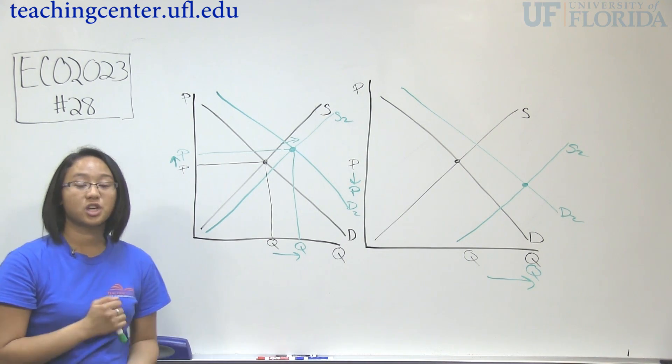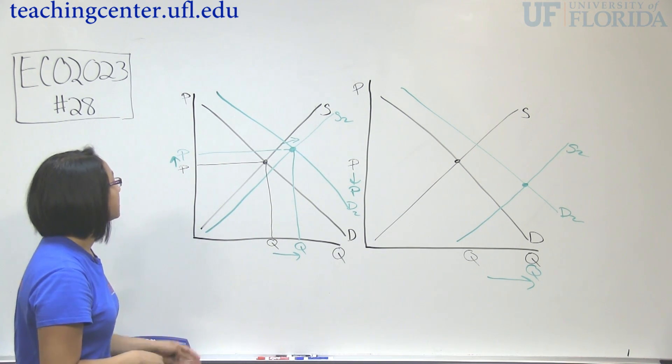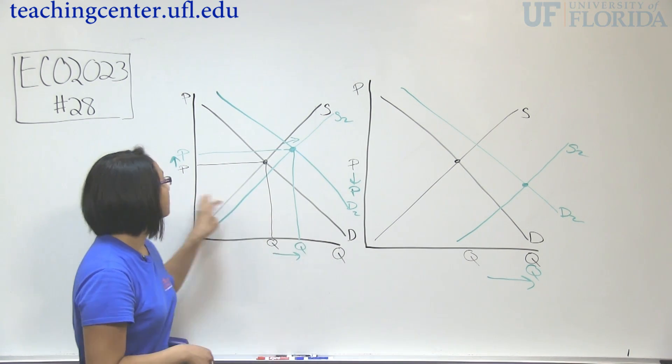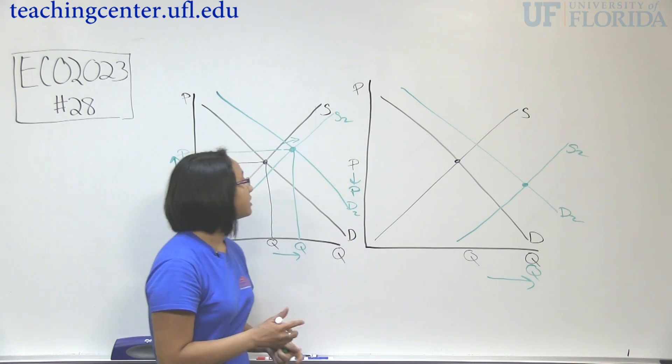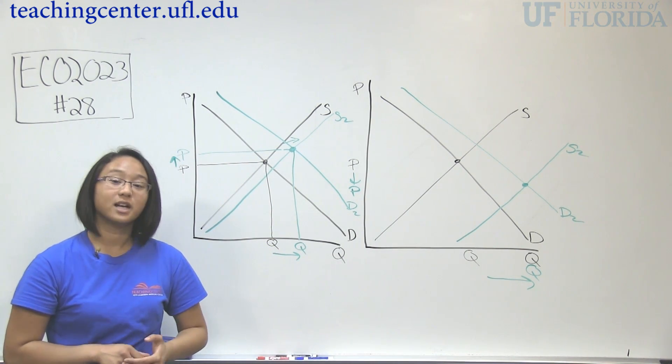So whenever you have a change occurring with both curves, you have to draw two graphs, because you don't know if price is going to increase or decrease, but we do know that quantity will increase. So draw two graphs to cover the full range of outcomes that could happen.